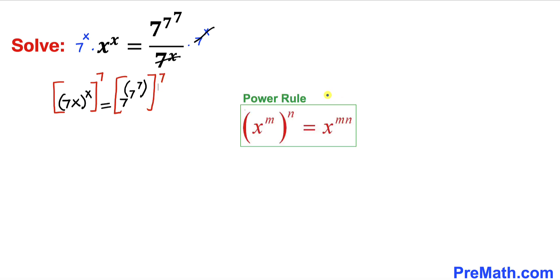Now let's recall this power rule of exponents: (x^m)^n = x^(mn). I'm going to apply it on the left hand side, so we can multiply out x and 7. Therefore our left hand side could be written as (7x)^(7x).